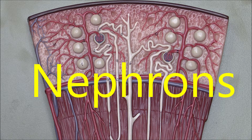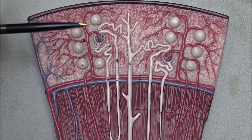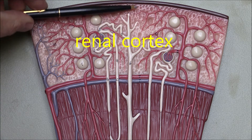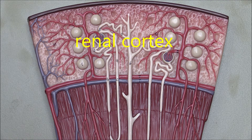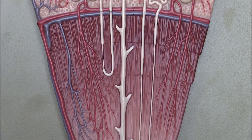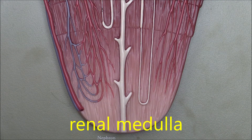In this video we're looking at the structure of the nephrons in the kidney and relating the position of the nephrons to the overall structure of the kidney itself. We have the renal cortex, the outer layer, and below we have the renal medulla, the lower layer.